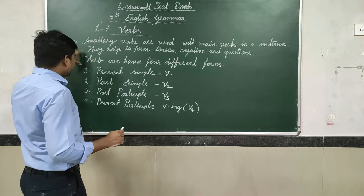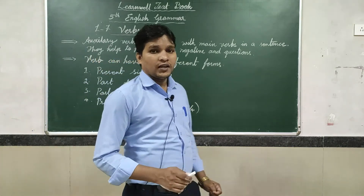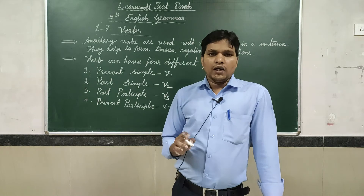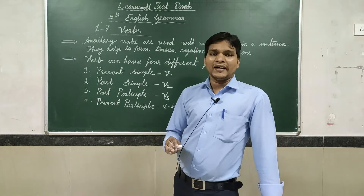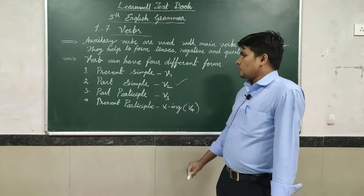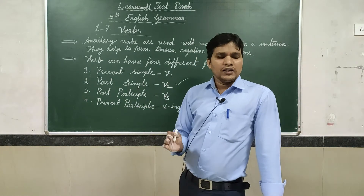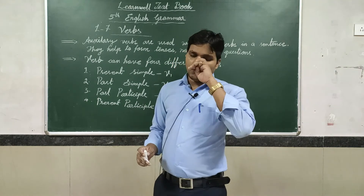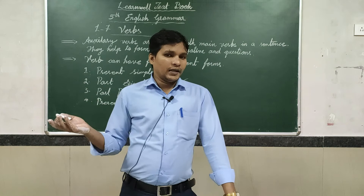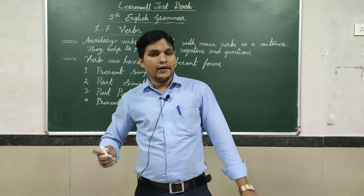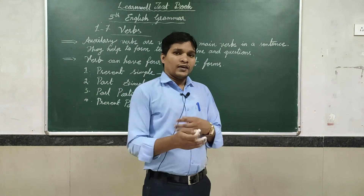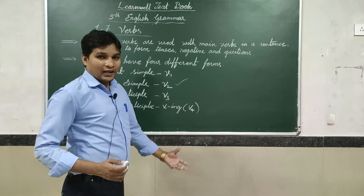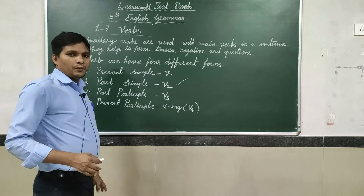Both can have four different forms. First: present simple, indicated as V1. Past simple is indicated as V2. Past participle is indicated as V3. Present participle is indicated as V4, which means V1 with the ING form. For example: read plus ING = reading; go plus ING = going; play plus ING = playing; jump plus ING = jumping. These are the parts of the present participles.